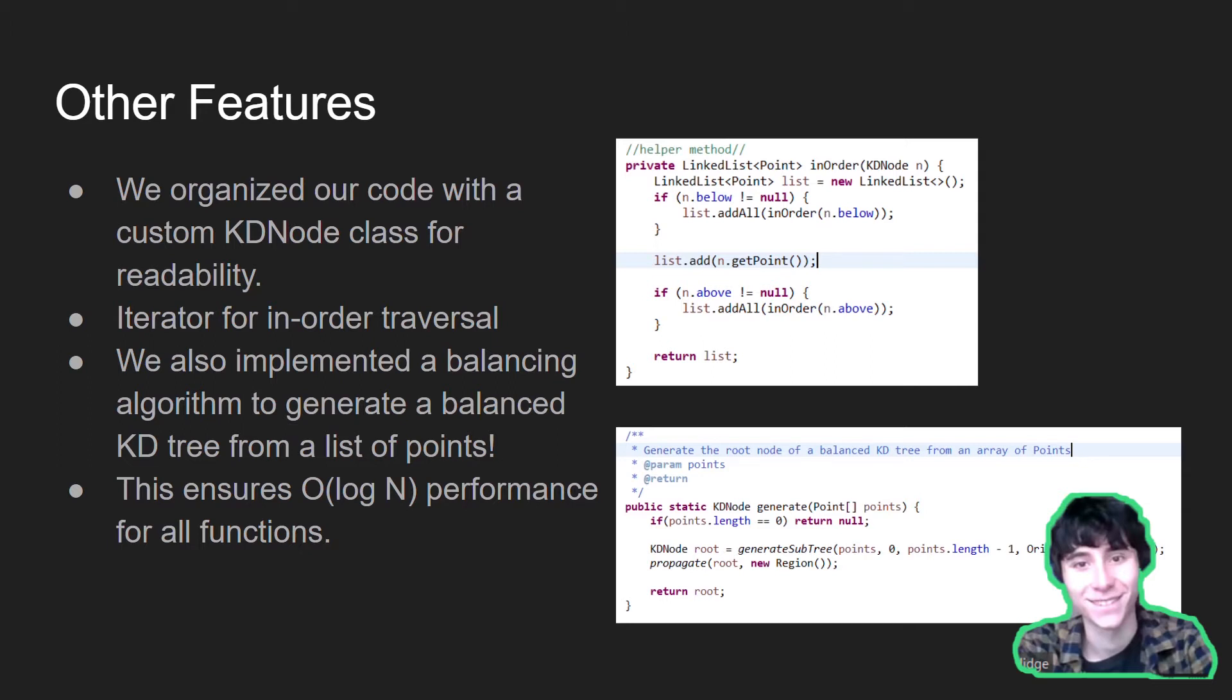In particular, the KD-tree class implements the iterable interface, giving an iterator that allows for in-order traversal of the tree. We also implemented a balancing algorithm that generates a balanced KD-tree from the given list of points.